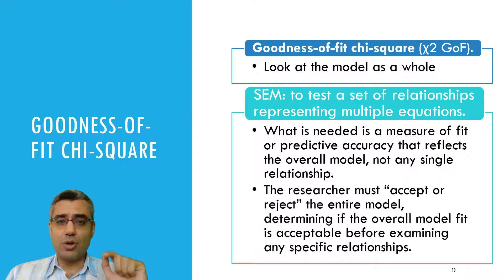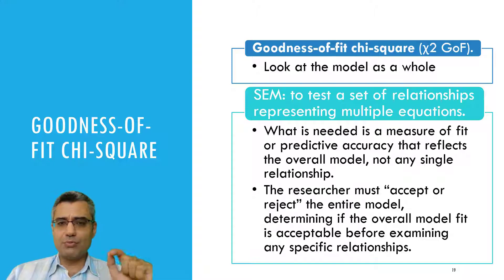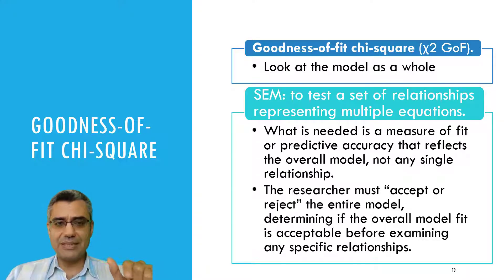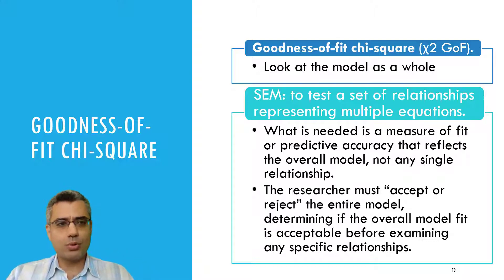One of the main advantages of SEM is that you can test the model as a whole. And to do so, we need a model fit index. So the model fit index that we use here is goodness of fit chi-square. This is the main model fit index that we use in SEM — we call it goodness of fit chi-square, shown as chi-square GOF, where GOF means goodness of fit.